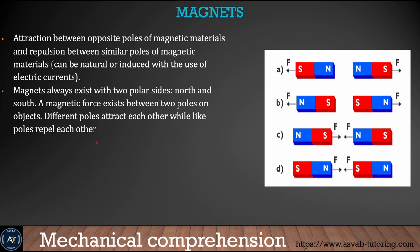Finally, we'll learn about magnets. Like poles — north with north — repel each other, while opposite poles attract each other. Make sure you understand what happens when two magnets come together. Watch this video multiple times, take notes, and download the application from the link below to practice. Good luck!